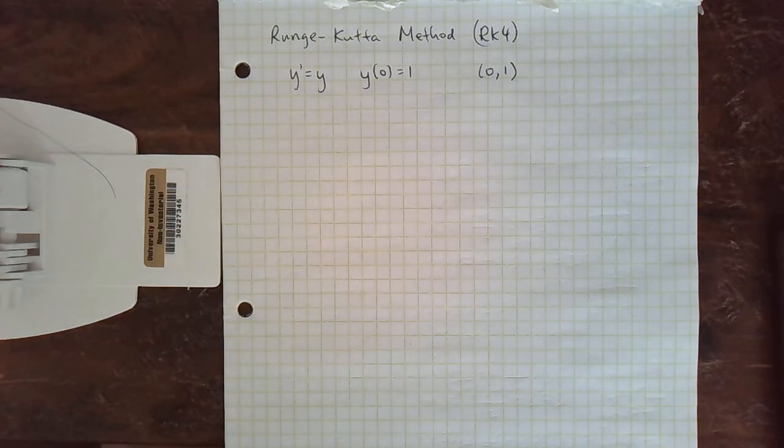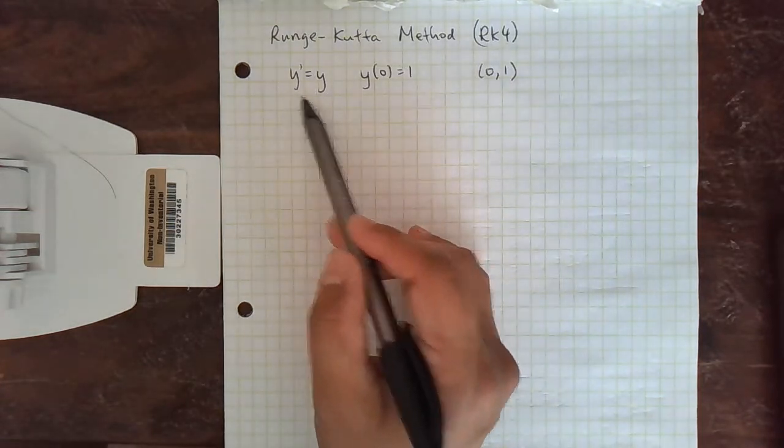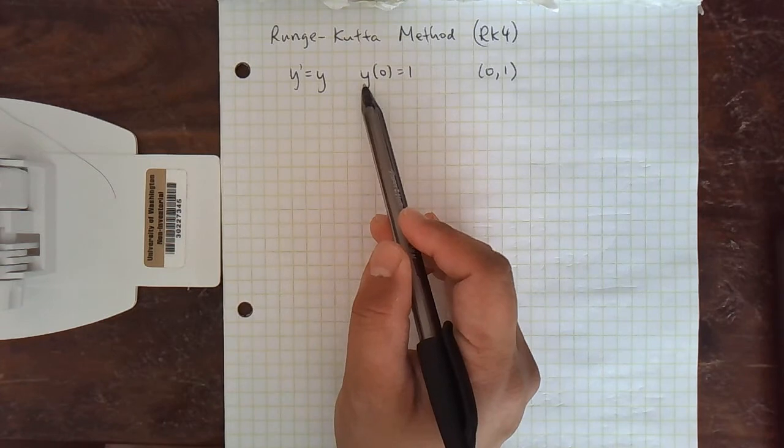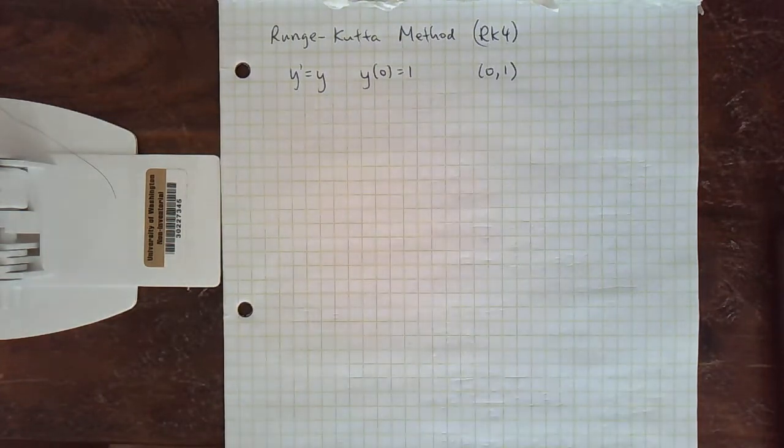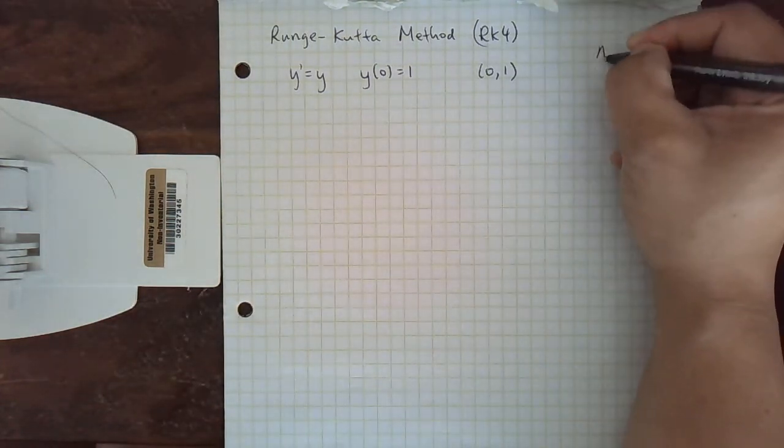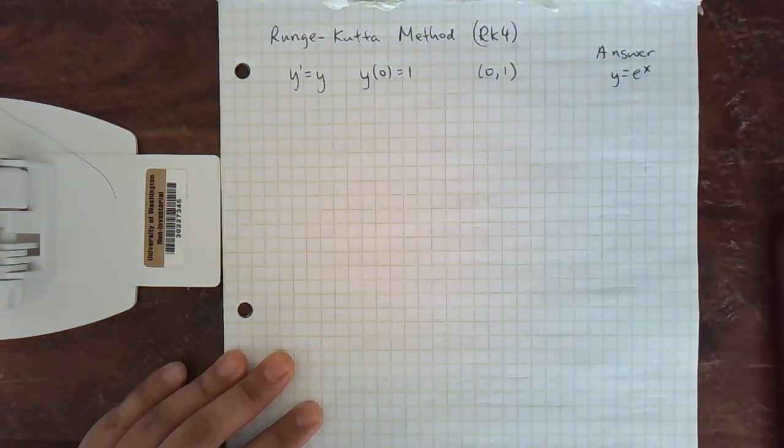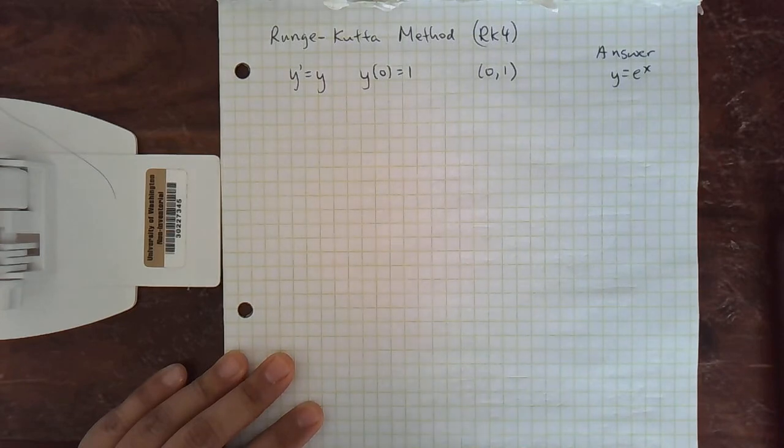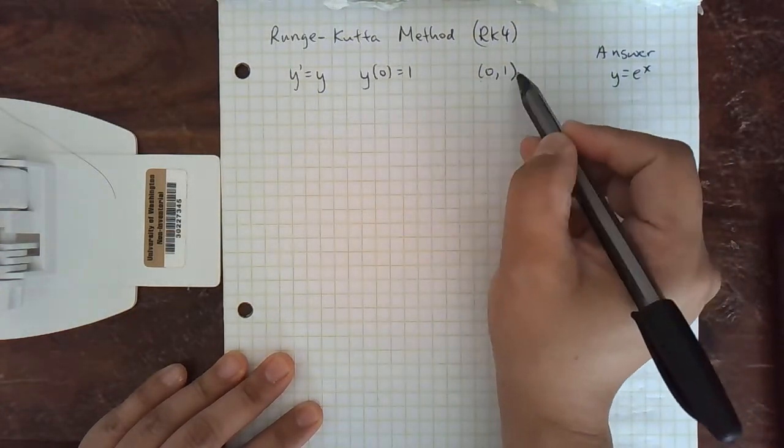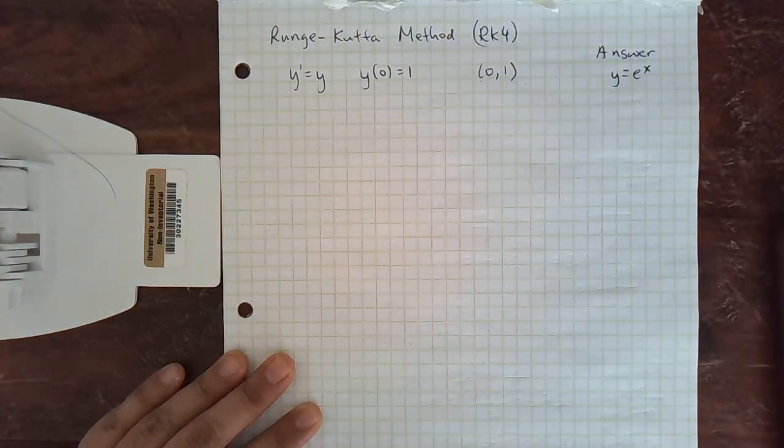So how do we get these four slopes? We're going to use our same example, y' equals y, with initial value y(0) equals 1. This is easy because we know the answer is y equals e to the x. So we can see how well we're doing. We know this point is definitely on the graph.